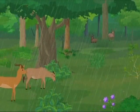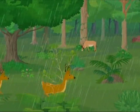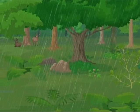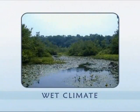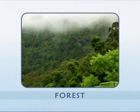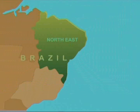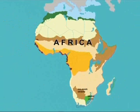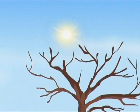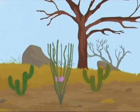Shrublands in the tropics find themselves crowded out by other plants and trees, because the wet climate of the tropics allows forest and grassland to flourish, not giving enough space for shrubs. But in northeast Brazil and some parts of Africa, there is a long dry season each year, making it hard for trees and grasses to survive. Here, the shrubs have the upper hand and they thrive.